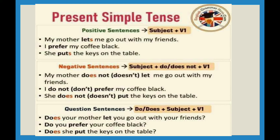When we make negative sentences, we add 'do' or 'does not' according to the requirement, because we don't have a helping verb. So we need to add do or does. For example: My mother does not let me — we change 'lets' to its root form 'let' and add 'does not'. With 'I', we add 'do not': I do not prefer. We keep the root form of the verb and add 'do not'.